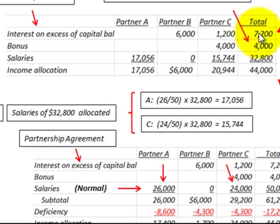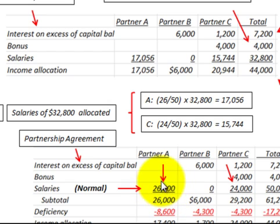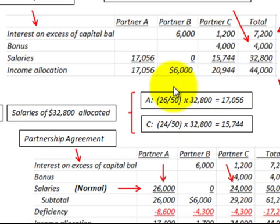This is what we mean by using the ranking system. We first determine the order in which we pay our different categories to the partners. In this case, we had enough to pay interest first and the bonus in full, but salaries were where the deficiency occurred. The salary shortfall was handled by applying each partner's proportional fraction — based on the original agreement — to the available salary pool. That is the partnership allocation of profit deficiencies using the ranking method.